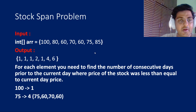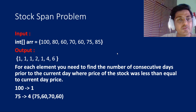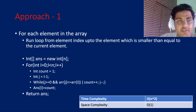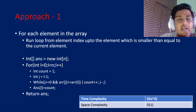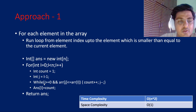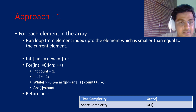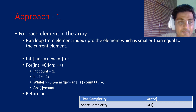Now how do we solve this question? The first approach that comes to mind: for each element, go towards the left side and keep going while the element is less than or equal to the current element. We run one outer loop, and inside it a while loop that continues until the element is no longer less than the current element. We start with a count of 1 and j = i - 1, incrementing count and decrementing j each step.